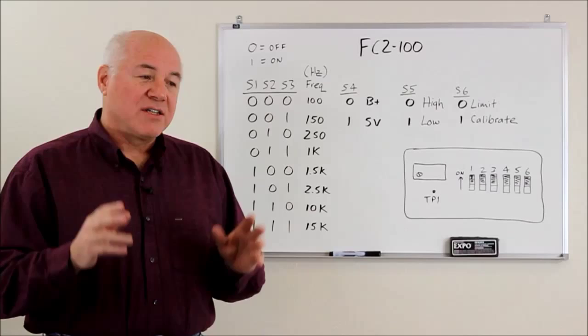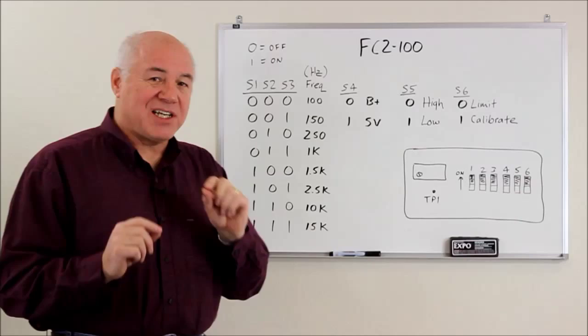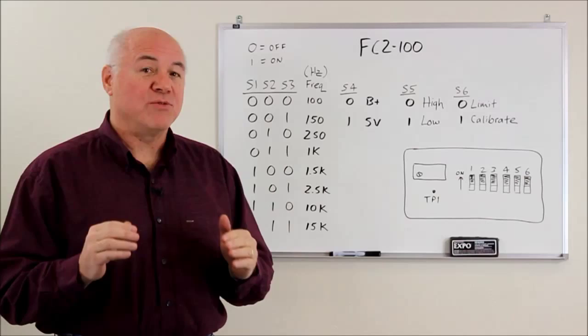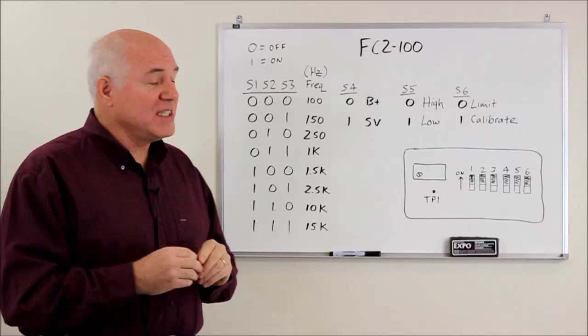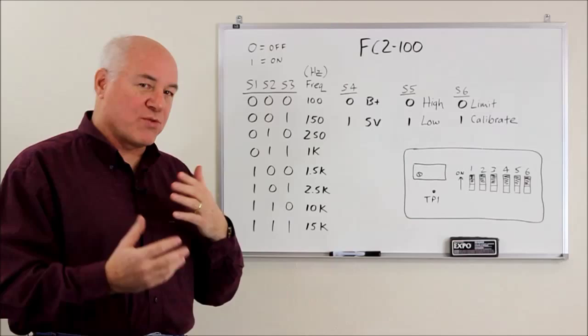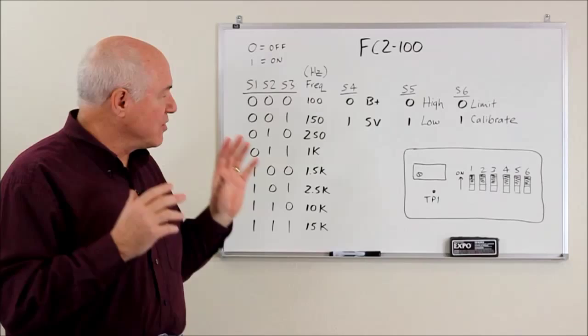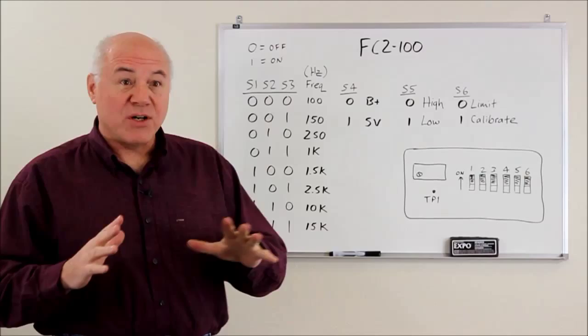So the fix for that is to add the frequency clamp, adjust it correctly, so that the ECU never sees that reading where it will fault, and you prevent the fuel cut from happening. Now it turns out the FC2 is a very versatile device, so I'm going to go through some of the different modes of operation and give you an idea of what it's doing. After I go through that on the whiteboard, we're going to go into the lab and see how it works on the test bench.